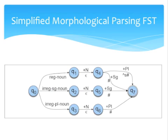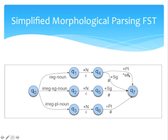Here we have the simplified morphological parsing FST. The 'cats' example goes into the regular noun path, goes to q1, then '+N' outputs empty and goes to q4. If it's singular, there's a pound symbol in the input string, which goes to the final state. If there's a '+PL,' meaning it's plural, it outputs an S, and then the pound symbol marks the end of tape. Irregular singular nouns — for example 'ox' — go through a different path, and irregular plural nouns — for example 'oxen' — go through yet another path.